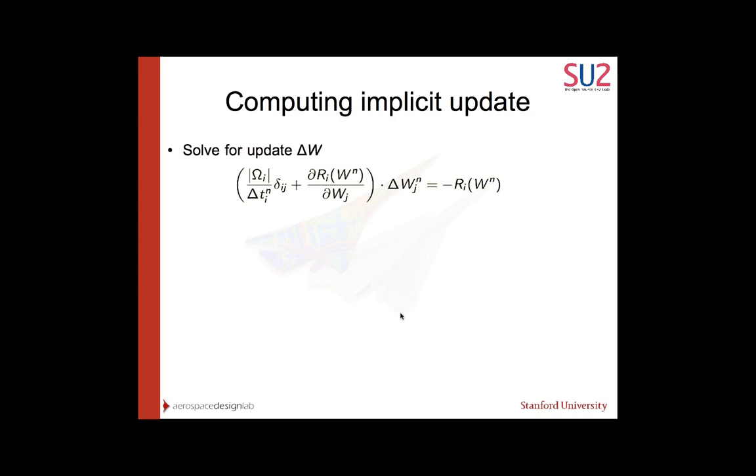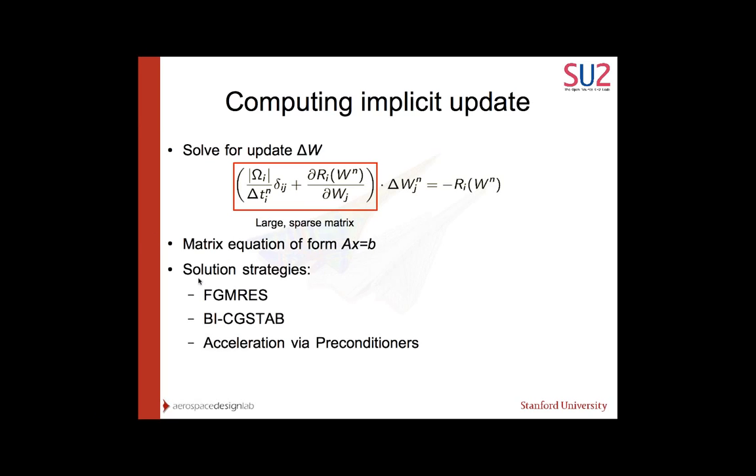Solve for an update delta w. This is the previous equation, but I've rearranged it so that delta w is standing alone on one side of the equation. On the left side here, we have a large sparse matrix. This is a matrix equation of the form ax equals b. There are many solution strategies you can use to solve ax equals b. For an unstructured solver, this is going to be a very sparse matrix. A nice way to go about these is using what are called the Krylov methods. These are two of them that are implemented in SU2.